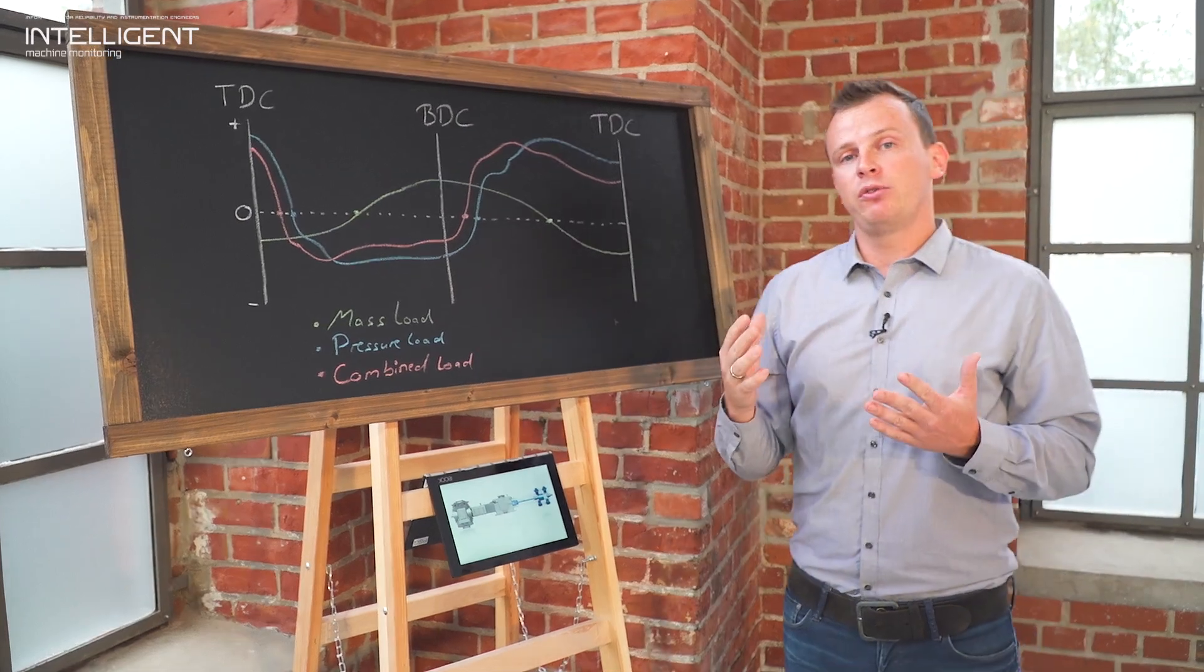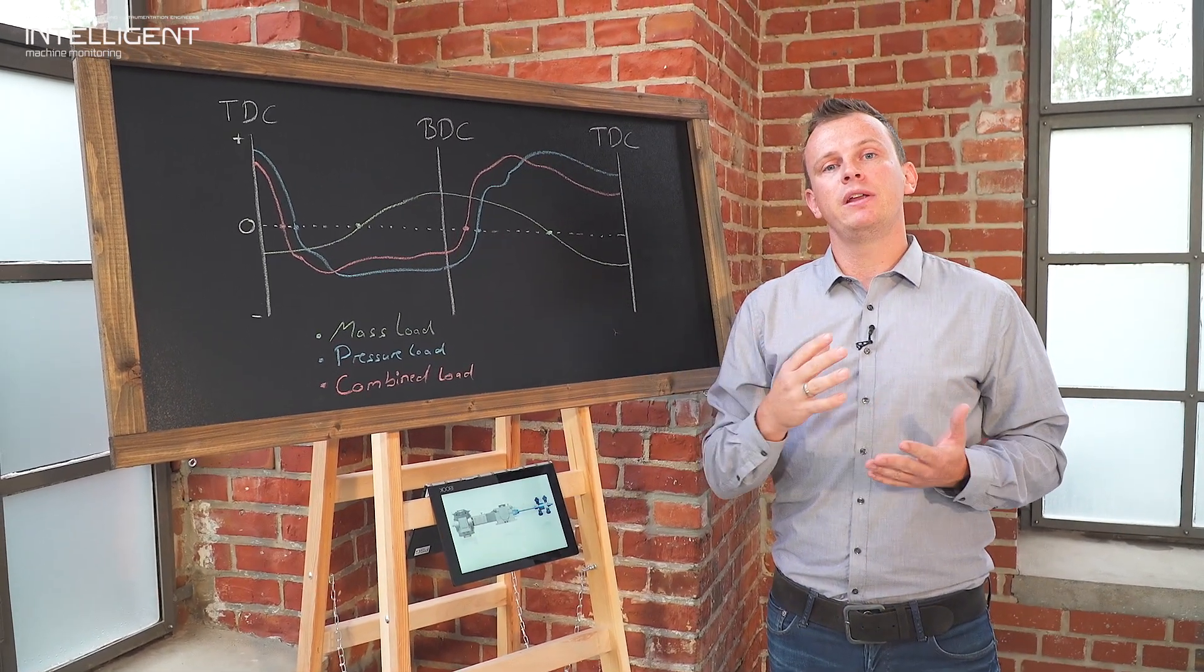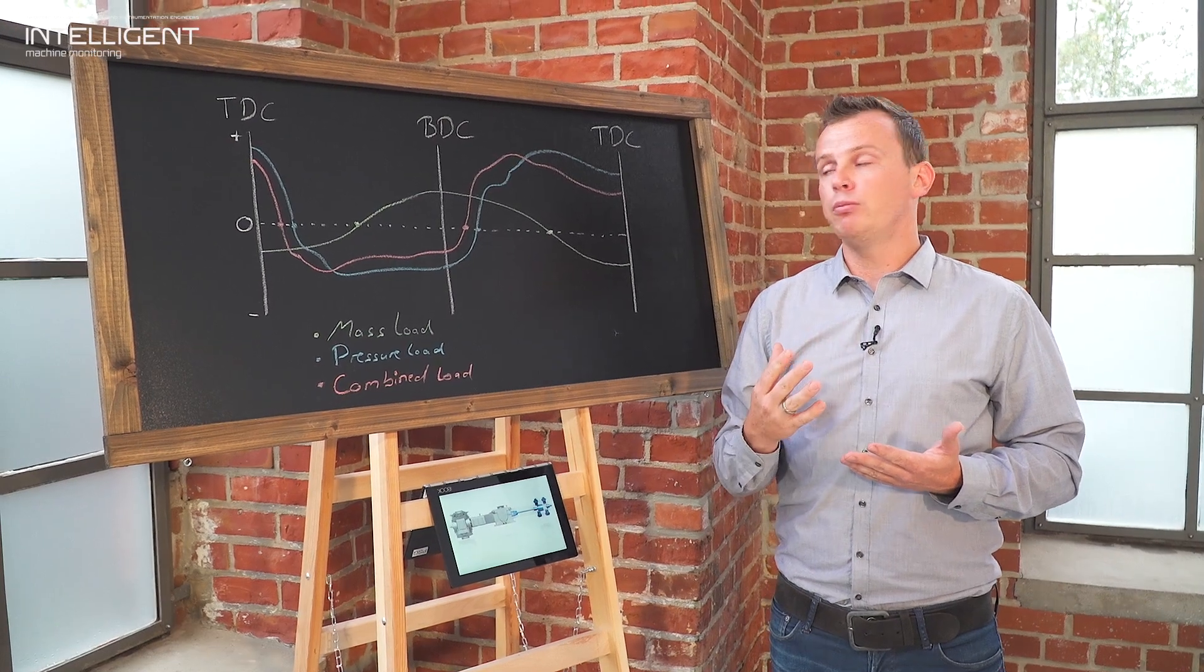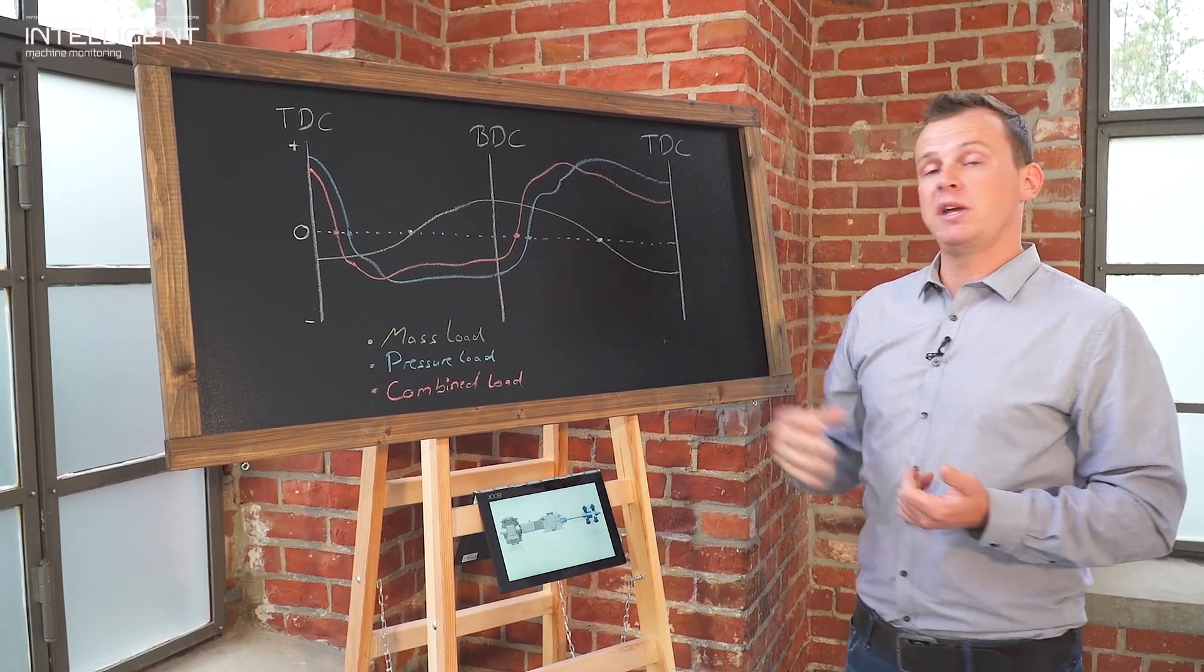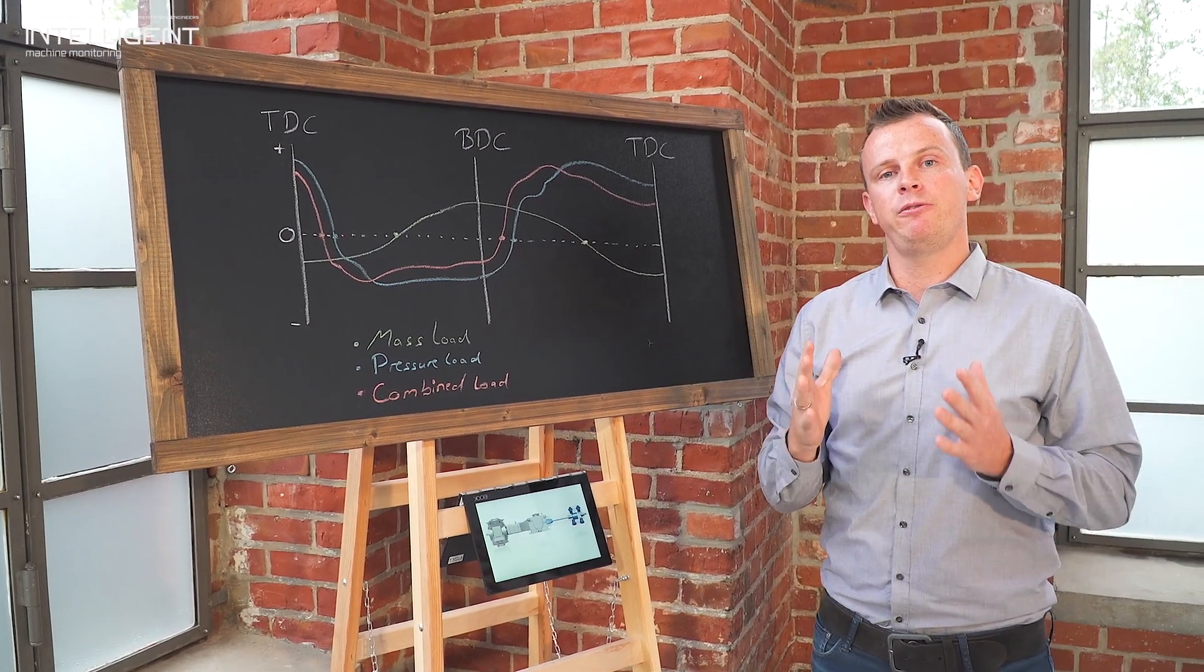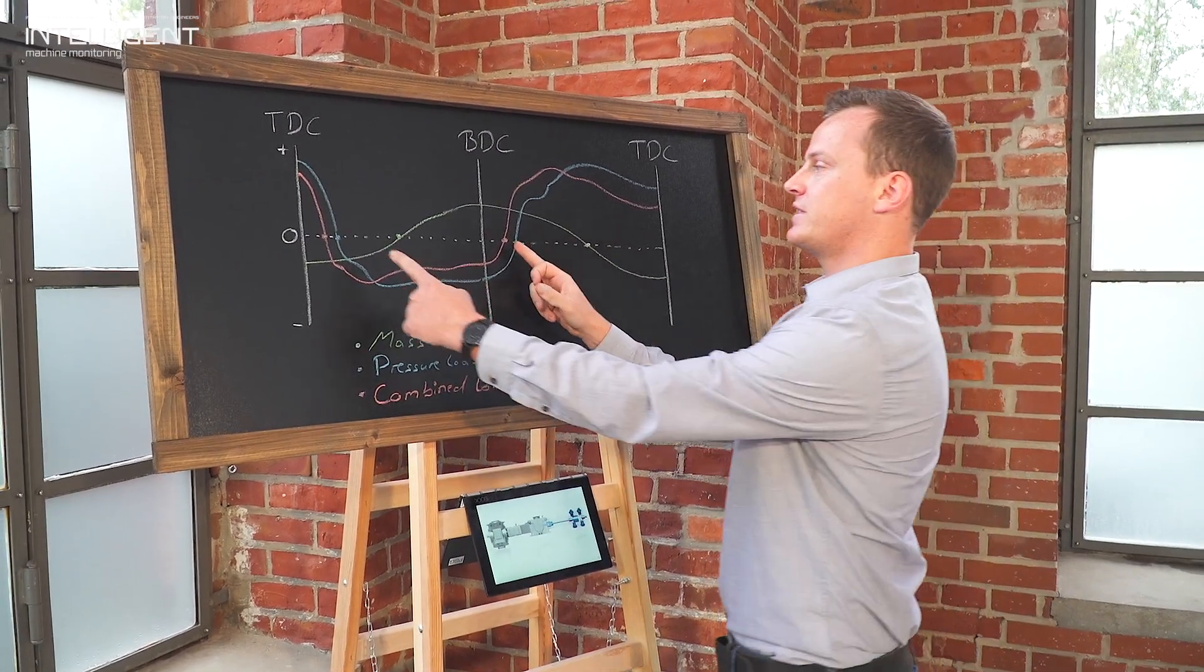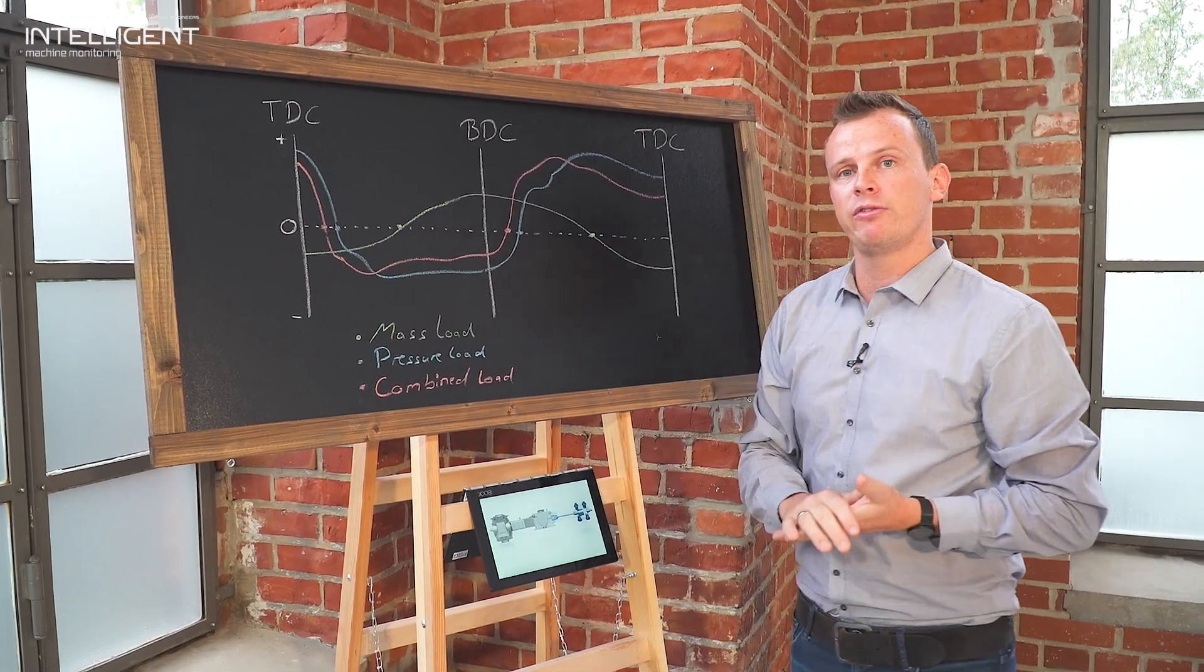The first one is we have to guarantee that the crosshead pin is lubricated all the time. The pin is only lubricated when we have these load reversal points. Based on the API, we need minimum 15 degrees crank angle. So in this example we have 180, more or less, so that's perfect.